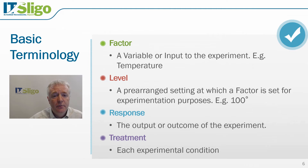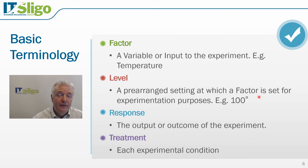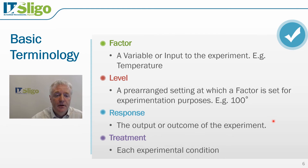There's some basic terminology that we need to understand first. A factor relates to the variable or an input to the experiment — for example, temperature could be a factor. The levels relate to the setting of that factor. For example, we may set temperature at 100 degrees Celsius, or there might be two levels: 100 degrees Celsius and 120 degrees Celsius. The response is the name given to the output or outcome of our experiment. The treatment is the experimental condition — for example, operating temperature at 100 degrees and pressure at 70 PSI.